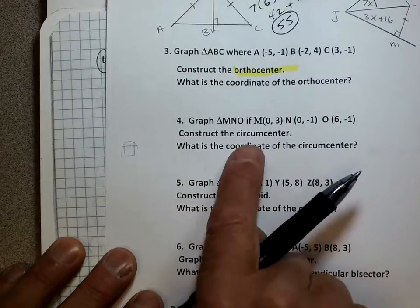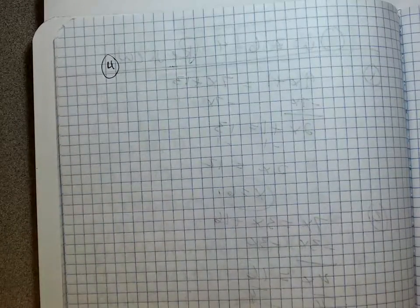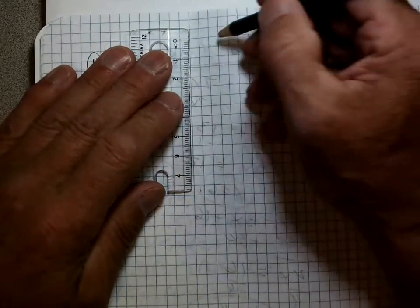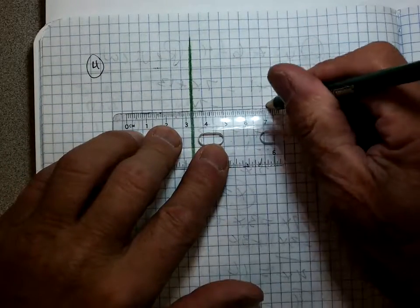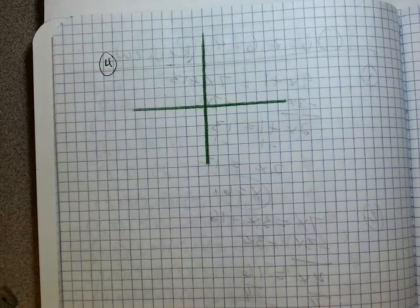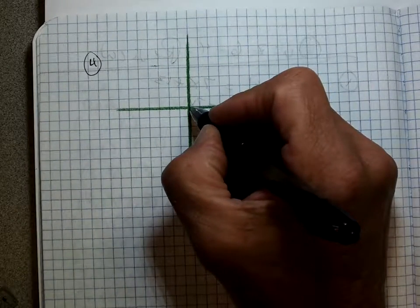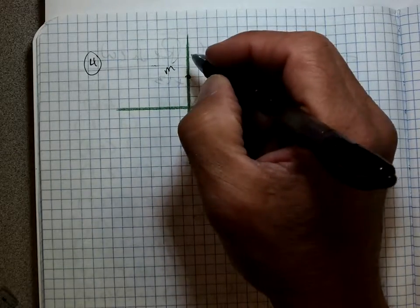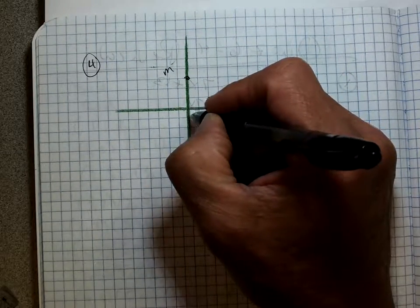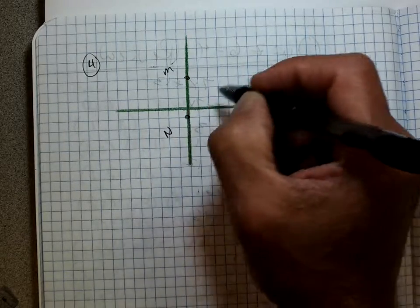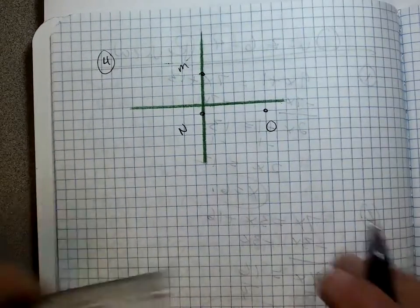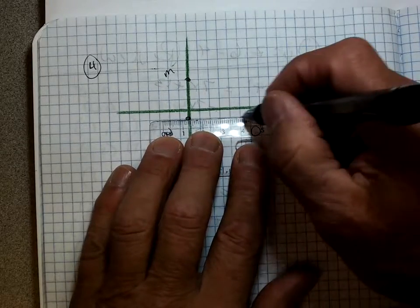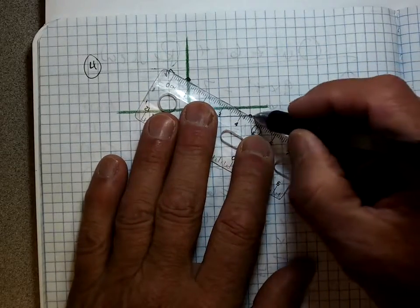On number four, we're going to need to find the circumcenter. So let's graph it first. Here we go. I've got M at zero, 3. There's M. N is at zero, negative 1. There's N. And O is at six, negative 1. There's O. So let me go ahead and draw in my triangle.